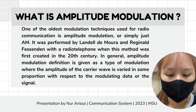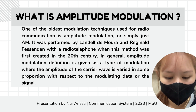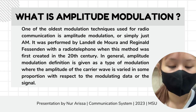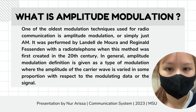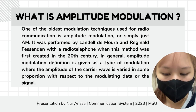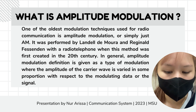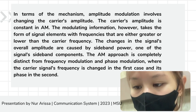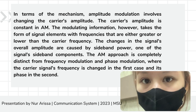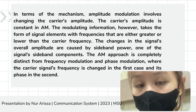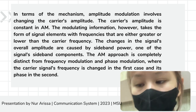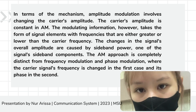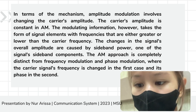AM was performed by Lando De Mora and Reginald Fessenden with a radio telephone when this method was first created in the 20th century. In general, amplitude modulation is defined as a type of modulation where the amplitude of the carrier wave is varied in some proportion with respect to the modulating signal. In terms of mechanism, amplitude modulation involves changing the carrier's amplitude. The modulating information takes the form of signal elements with frequencies either greater or lower than the carrier frequency.